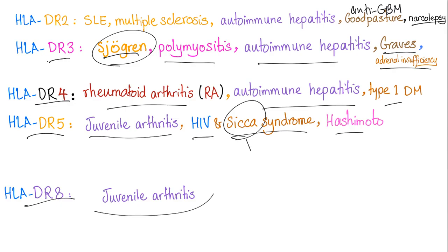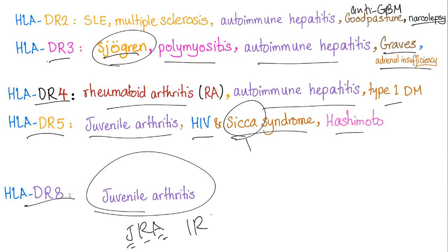HLA-DR8 is associated with juvenile arthritis. This condition is sometimes called JRA (juvenile rheumatoid arthritis), or JIA (juvenile idiopathic arthritis) — not to be confused with the individual retirement account. It refers to idiopathic juvenile arthritis.